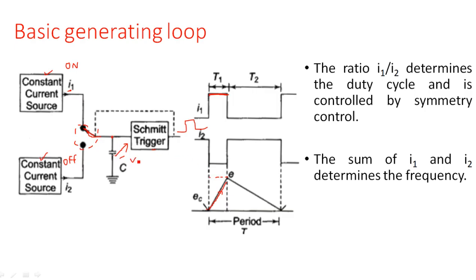The voltage across the capacitor Vc is continuously applied to the input of the Schmitt trigger, which internally has a reference voltage. When the capacitor voltage crosses this reference voltage, the output of the Schmitt trigger goes to logic zero, which makes the switch connect to the lower constant current source. Then i2 starts flowing and the capacitor discharges — releasing the charge accumulated in the previous phase. So i2 is on and i1 is off during this discharge phase.